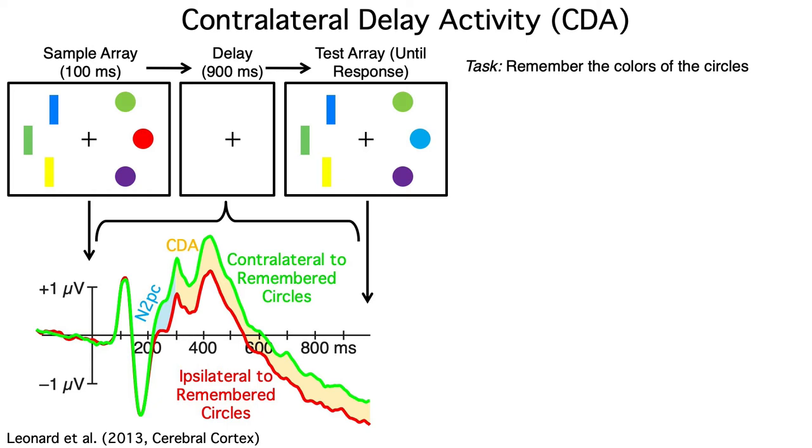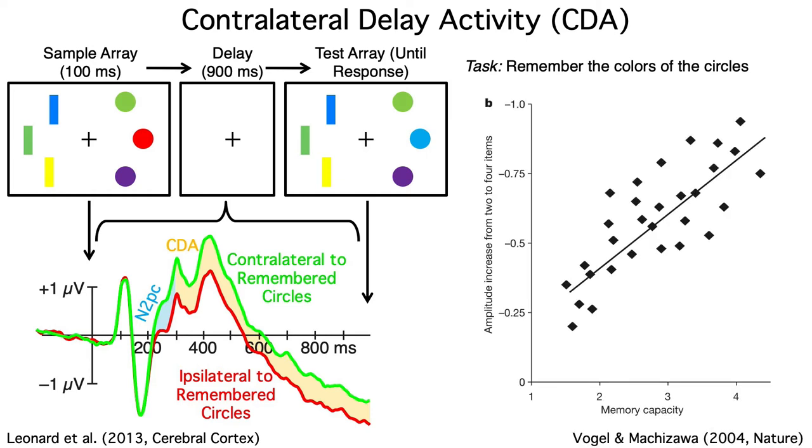The N2PC reflects the initial focusing of attention onto a visible stimulus, and the CDA represents the maintenance of information in working memory after the stimulus has disappeared. One of the coolest things about the CDA is that it's strongly correlated with individual differences in behaviorally measured working memory capacity. It's not often that you can see such a strong correlation between brain activity and individual differences in cognitive ability.